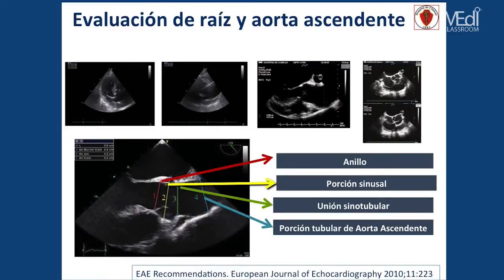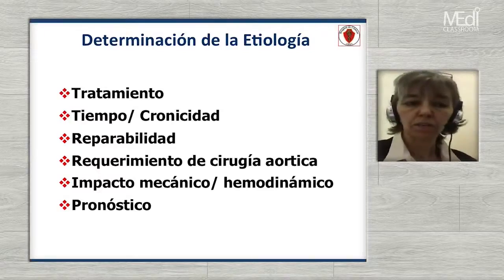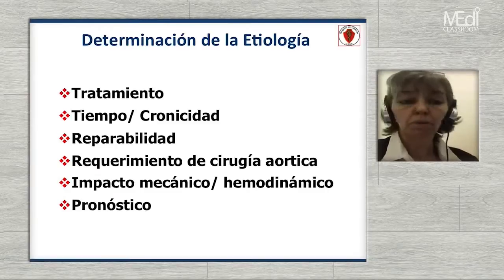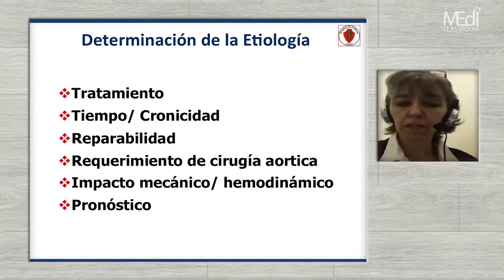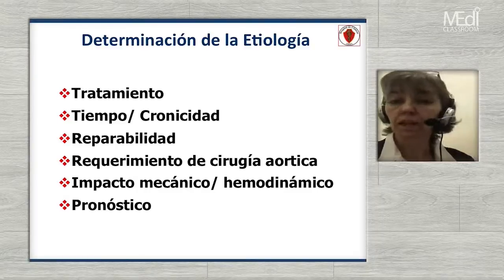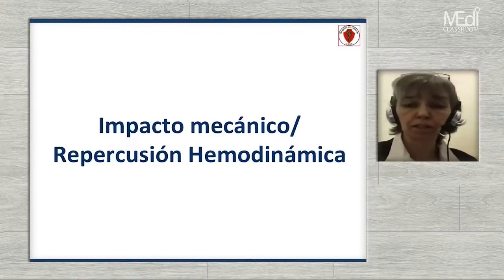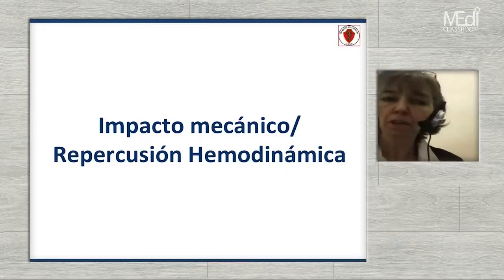Podemos ver la válvula, pero muchas veces para ver la aorta ascendente tenemos que subir uno o dos espacios hacia el supra esternal, donde podemos tener una ventana más óptima de la aorta ascendente. La etiología nos va a determinar el tratamiento, la cronicidad, si podemos reparar la válvula o no, el requerimiento de cirugía y el impacto mecánico del pronóstico. En el informe debe constar una etiología probable de la causa de la insuficiencia aórtica.